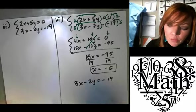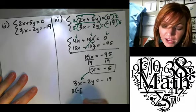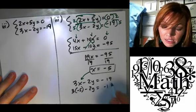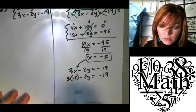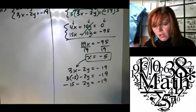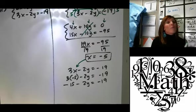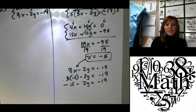3 times negative 5 minus 2y equals negative 19. Negative 15 minus 2y equals. Yep. Too late. We're already too far into it. That's a lot of negatives. I know. It's all right, though. I think, yeah, if I'm looking back at this, I think the top one may have been easier because there's a 0. But that's okay.